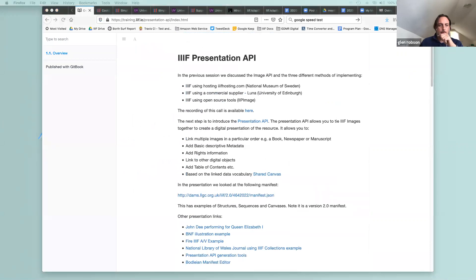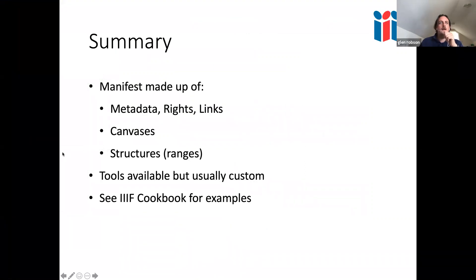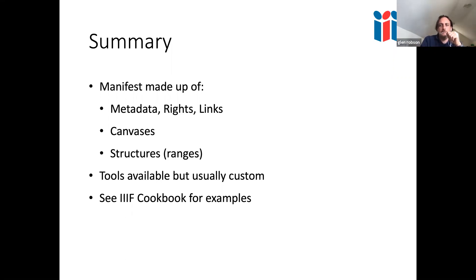In summary, today I've shown a look at a manifest and what it contains — how it relates to the viewer, the metadata, rights and links, and how they're shown in the viewer. We concentrated on canvases because they're really important to the way the Presentation API works. We briefly covered ranges for table of contents, talked about the tools available and highlighted that most people create their own tools because metadata and systems are so different. Then I went through the IIIF Cookbook for examples, and I also showed the workshop with a hands-on video that takes you through the Bodleian Manifest Editor.